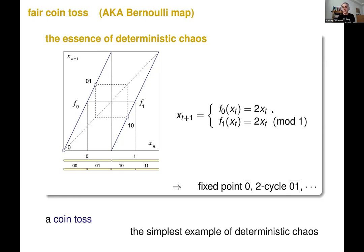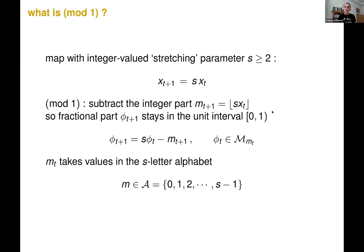Every possible trajectory can be specified either as a sequence of real numbers X, or as a sequence of lefts and rights — zeros and ones — symbolic dynamics. When we teach chaos, we show how you organize all possible sequences in deterministic chaos. There is nothing probabilistic about this. You enumerate all possible futures. Now what's modulo one? There's a stretching parameter S, larger than one — an integer two or larger in today's talk. We subtract the integer part, so the remainder, the field phi, is always in the interval zero to one. M describes which kind of solution you have — that's called symbolic dynamics, and it has an alphabet.